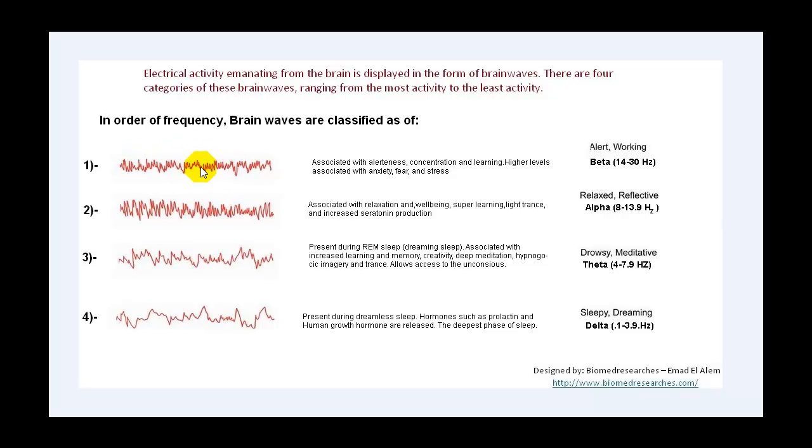This is the first type of brain wave, which is called beta brain waves. It ranges from 14 to 30 hertz per second. When I'm talking about the hertz, I'm talking per second. So beta brain waves will range from 14 to 30 hertz per second, can be noticed on alert and working. You can see the shape of beta wave. It is associated with alertness, concentration and learning, higher levels associated with anxiety, fear and stress.